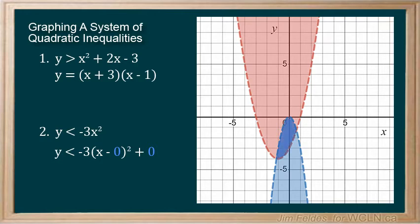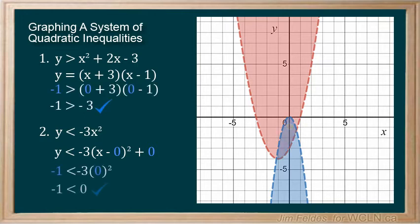We'll check one point in the intersection just to be sure. Let's try 0 and negative 1. This point satisfies both restrictions as we'd expected.